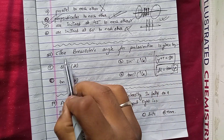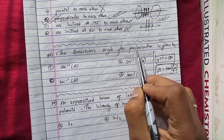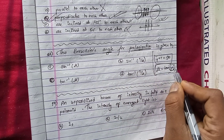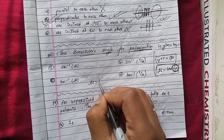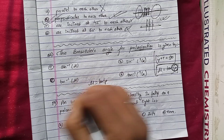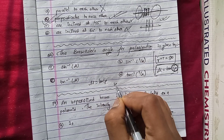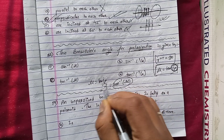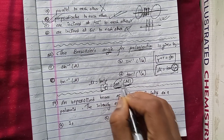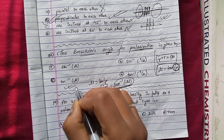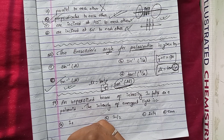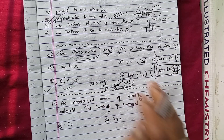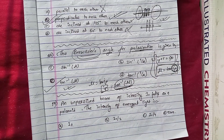Polarization is given by Brewster's angle. The formula for Brewster's angle: mu equals tan(ip), so ip equals tan inverse of mu. Brewster's angle is given by this formula. Now we have the question — finished.